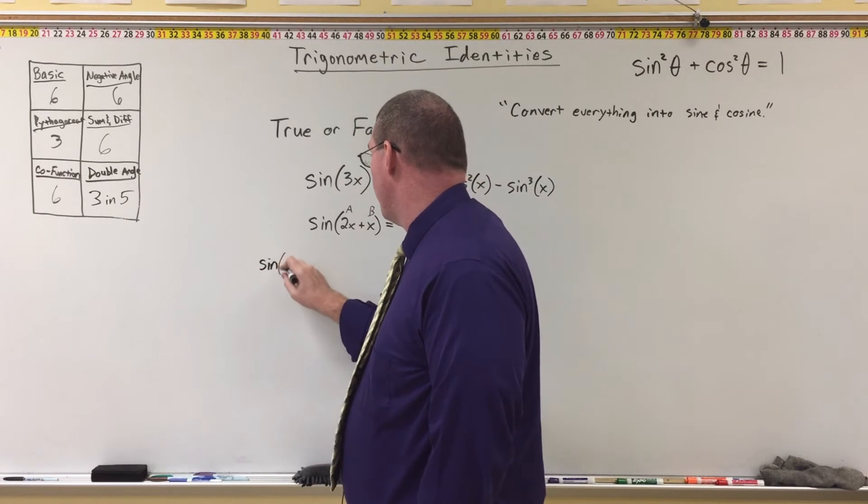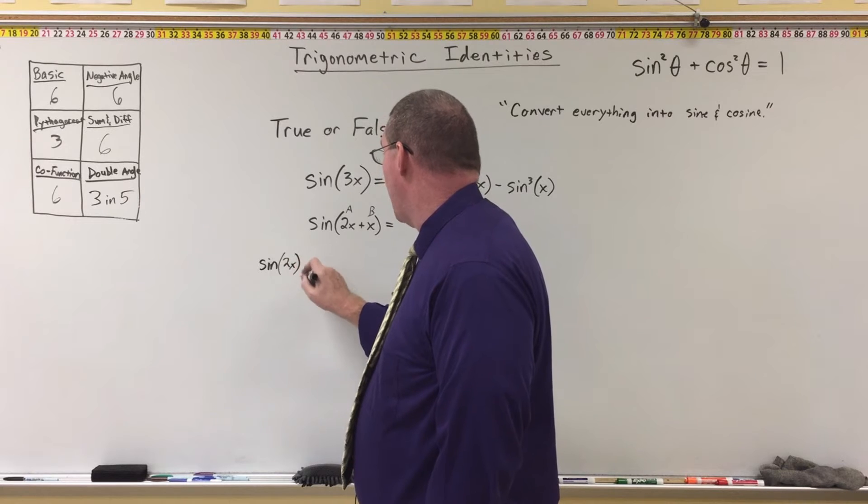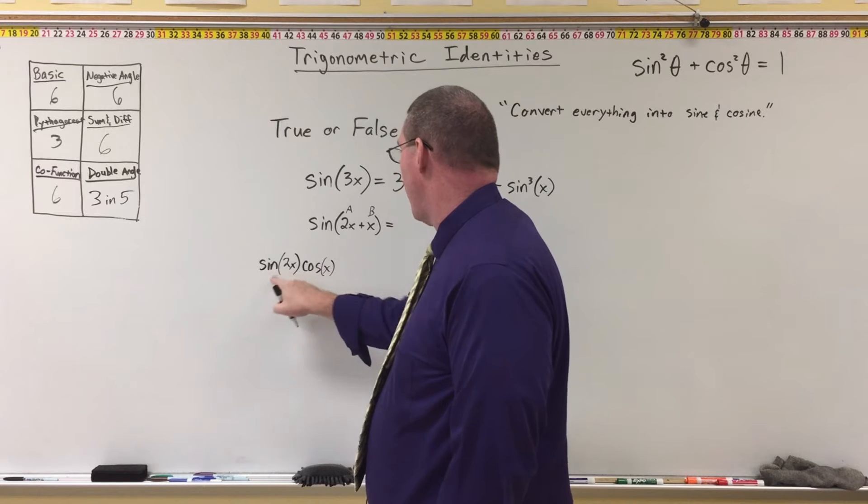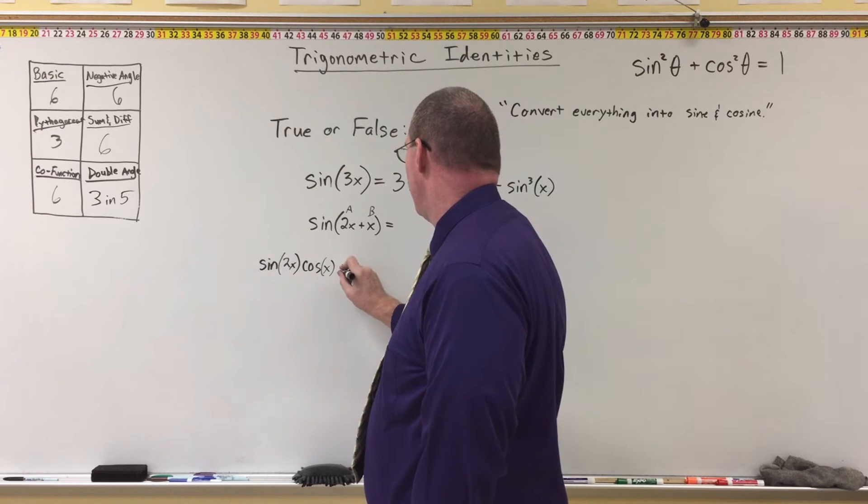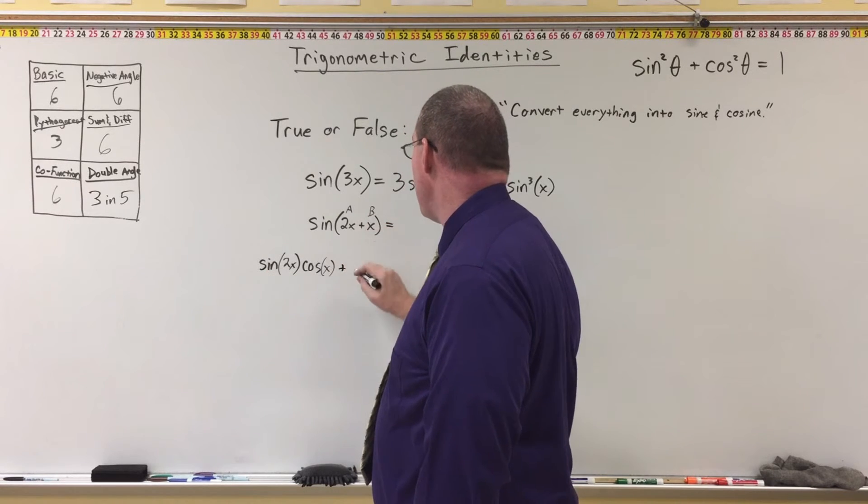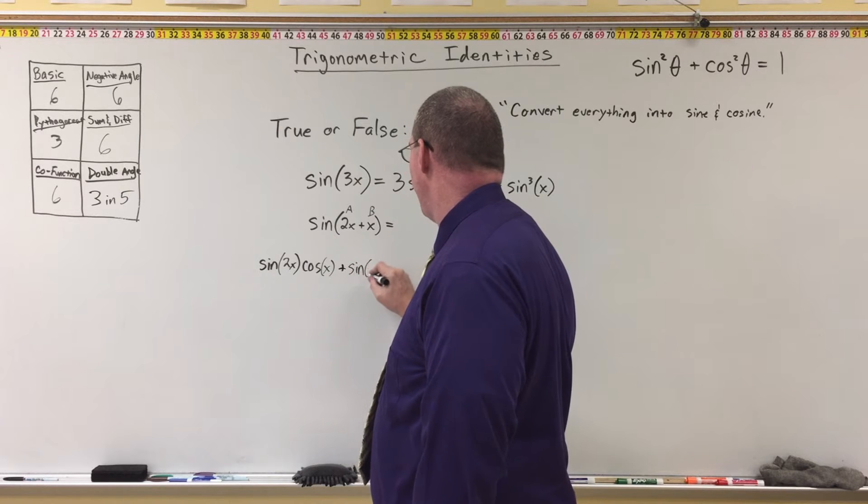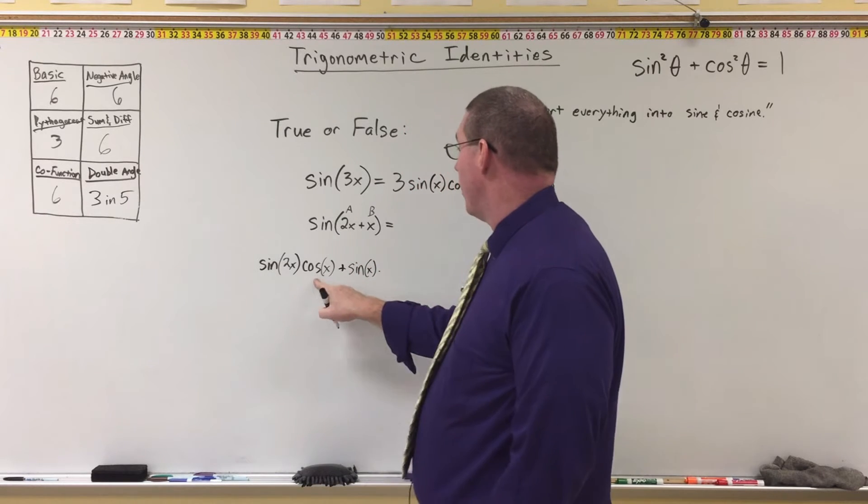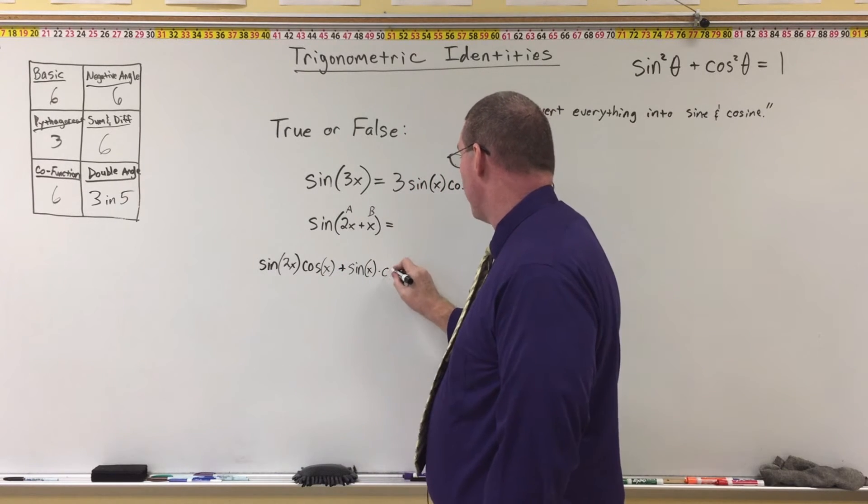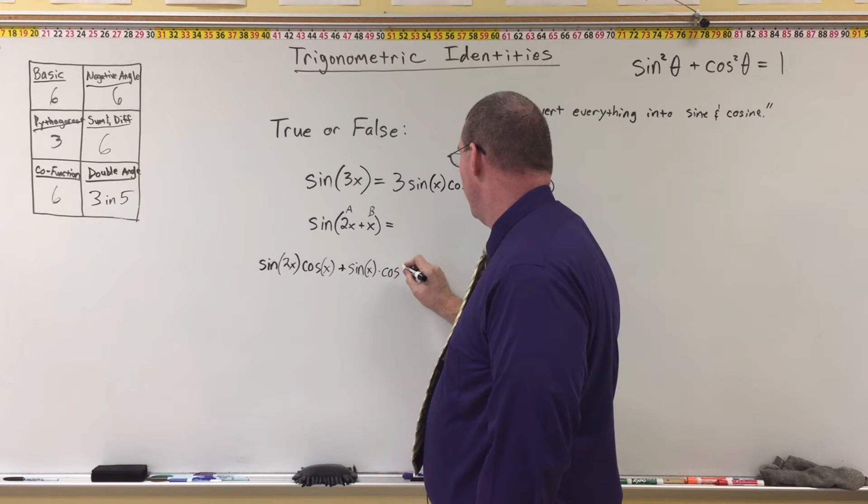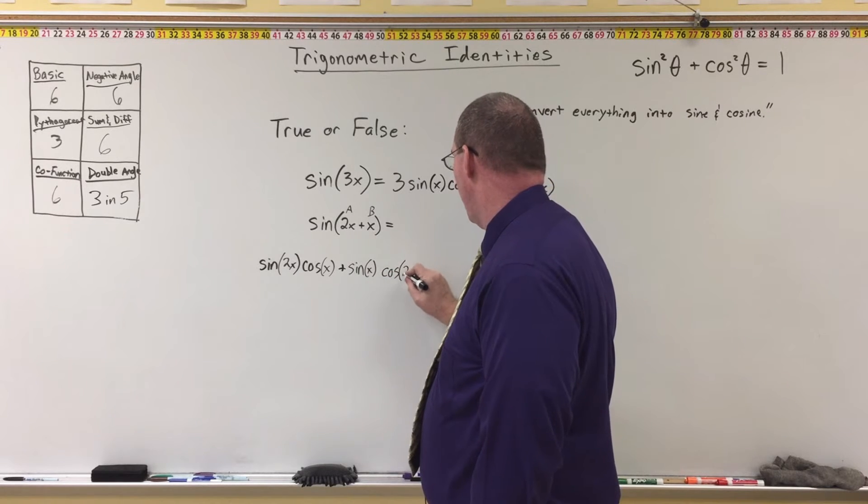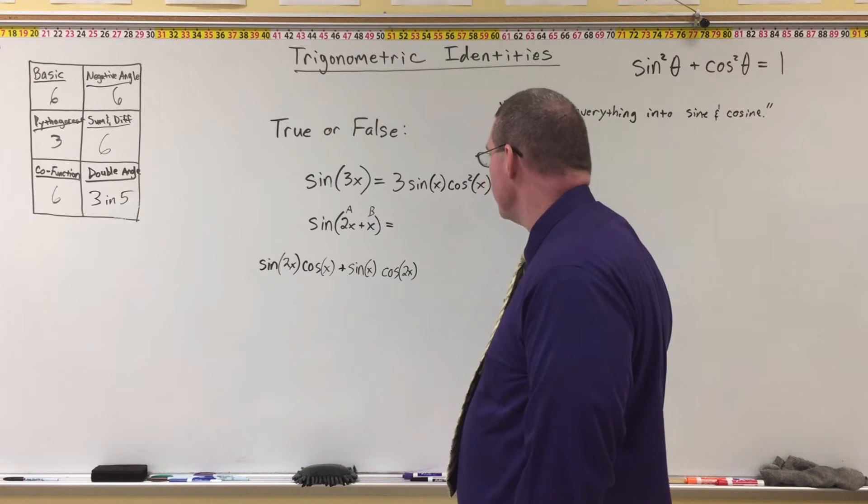2x, times cosine of b, which in this case is just x. So we'll have sine of 2x times cosine of x plus sine of b, which will be sine of x times cosine of a, which is 2x. Cosine of 2x.